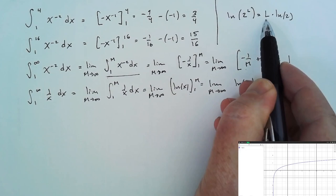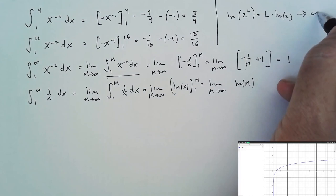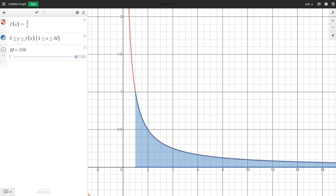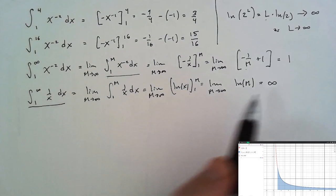So our limit down here is also infinite. This tells us that the area under the 1 over x curve from 1 to infinity is not finite. We might say that this improper integral diverges, in this case, to infinity, while our previous improper integral converged to 1.